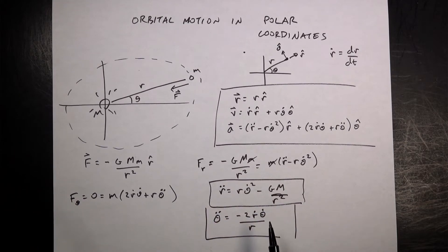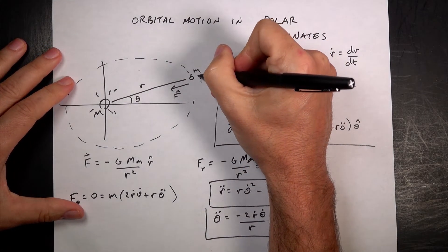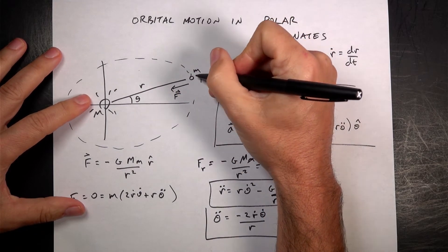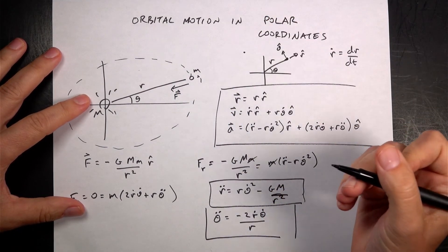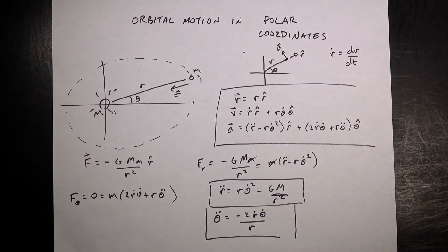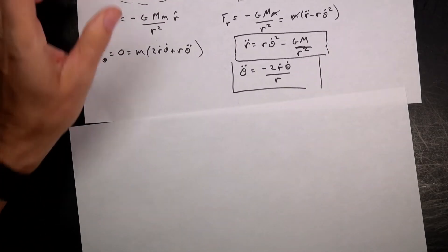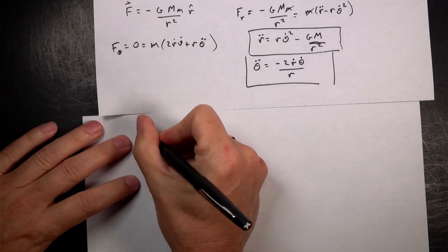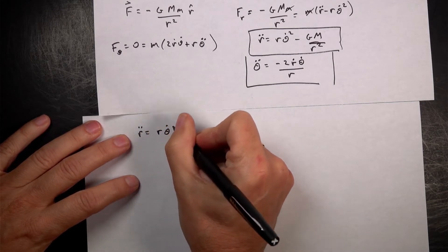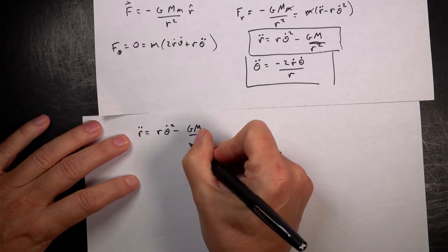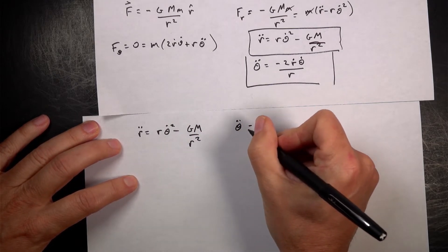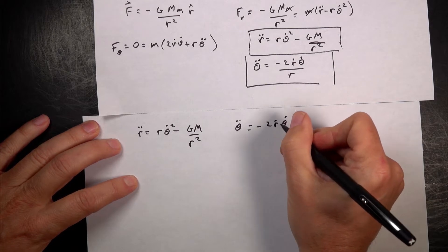So now I have two differential equations: one for r-double-dot and one for theta-double-dot. If I know r, r-dot, theta, and theta-dot at time t = 0, I can solve this numerically. I've done this kind of thing in my other videos too.